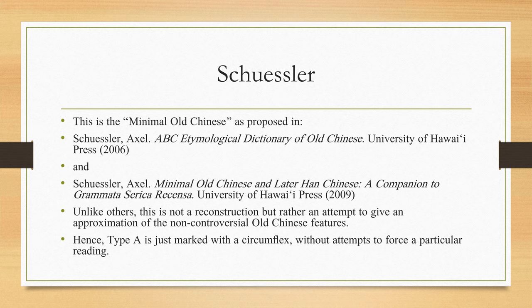The final reconstruction for today is the Minimal Old Chinese of Schuessler, covered in two of his books, both issued by Hawaii University Press in the ABC dictionary series. Unlike all the previous options, this is actually not a reconstruction — it is an attempt to give an approximation of non-controversial old Chinese features, and strictly speaking it is not supposed to be read aloud. It just uses a circumflex mark to denote type A without demanding a particular reading for it. I will render type A as vocalic length, not because I specifically support this solution, but just to have something to distinguish those syllables on sound.